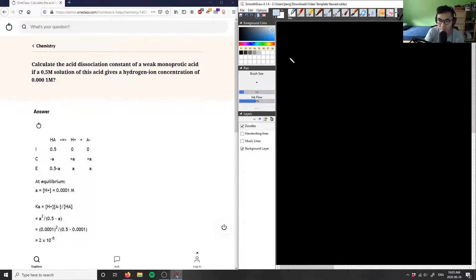So we can assume that we have some type of HA here, and it's going to dissociate into its hydrogen ion. So we can say HA plus H2O.